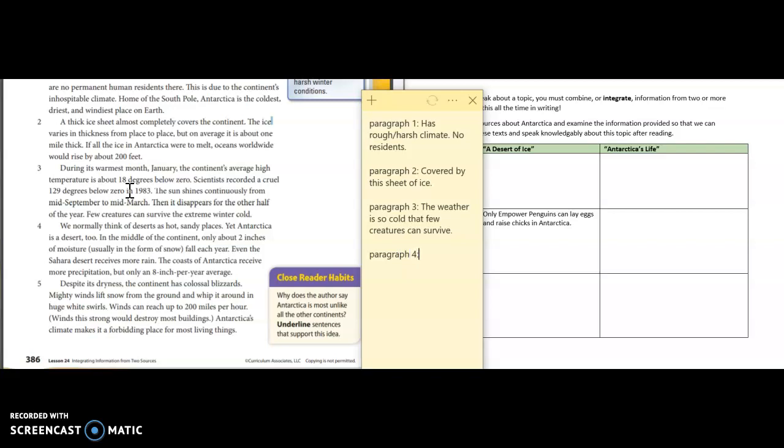Paragraph four: We normally think of deserts as hot, sandy places. Yeah, I guess I wouldn't really classify Antarctica necessarily in my brain as a desert, but let's see what they have to say. Yet Antarctica is a desert too. Huh, well as a reader again I'm kind of pausing because that surprises me. In the middle of the continent, only about two inches of moisture, usually in the form of snow, fall each year. Even the Sahara Desert receives more rain. Okay, so what I'm guessing is that because there's such a small amount of rain, that's why it's classified as a desert. That's right.